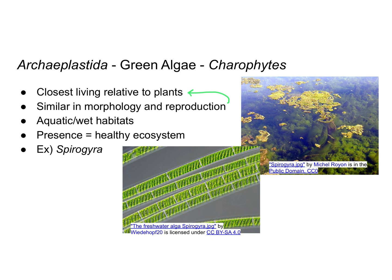Charophytes are often found in aquatic or wet environments, as seen in this picture. Their presence is actually a sign of a healthy ecosystem, so a lot of the algae you see in a pond isn't necessarily a bad thing. One example of a charophyte is the spirogyra, which has a spiral shape inside.